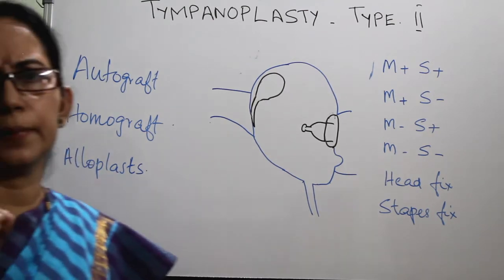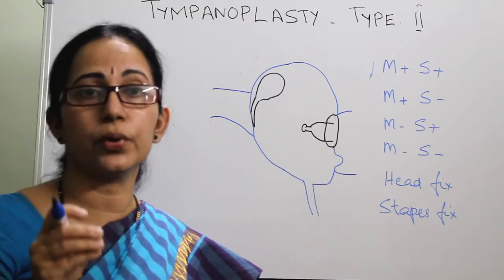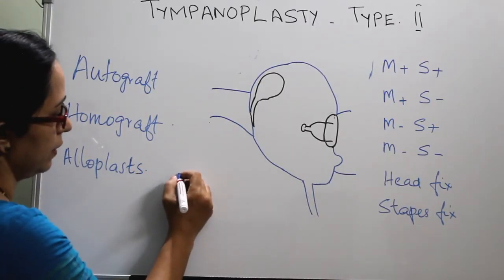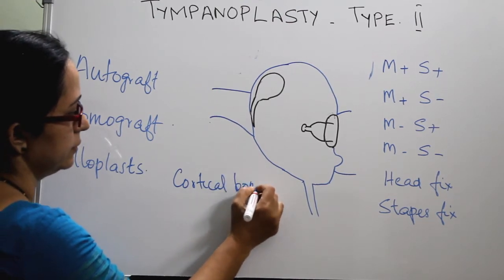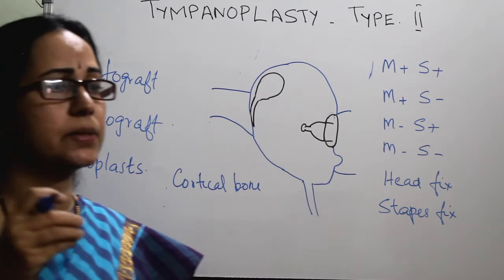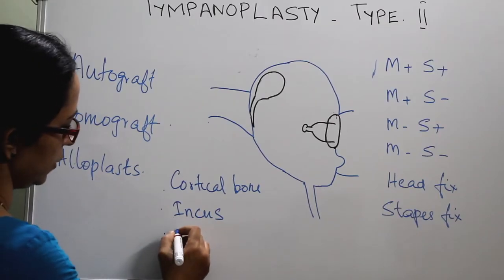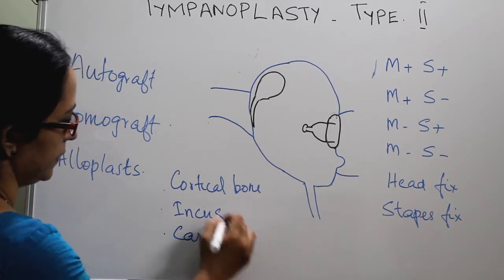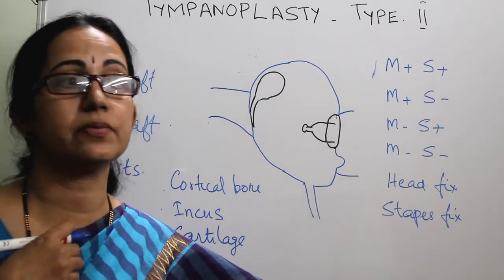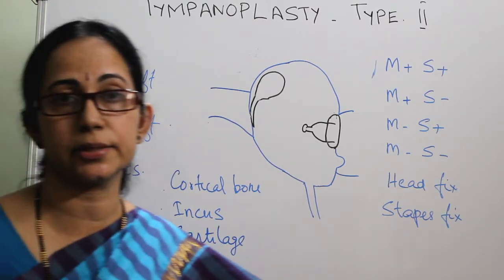Biological materials that can be used include cortical bone, or the ossicle itself — especially if the incus is damaged with a little erosion of the long process, we can reshape the incus and use it. Also cartilage. These are the common autografts used. Autograft means from the same patient: your own incus, your own cortical bone, or your own cartilage.